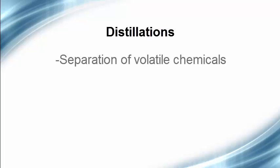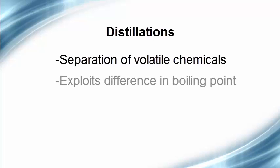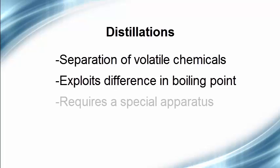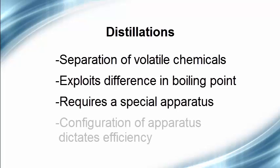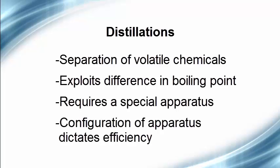Welcome to part two of our video series on chemical separations. In this video, we will be focusing primarily on distillations as a means of separating volatile chemicals from one another. As we learned in the last video, distillation exploits the difference in boiling points between two or more chemicals to allow for their separation. We also learned that a distillation will require a special apparatus. However, in this video, we will also look into how the configuration of that apparatus can affect the efficiency of the distillation process.